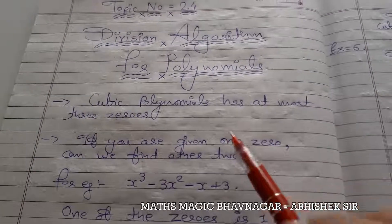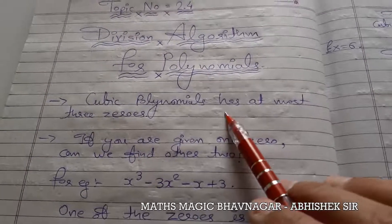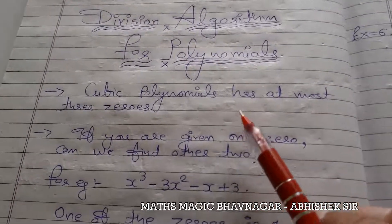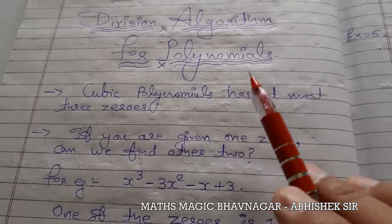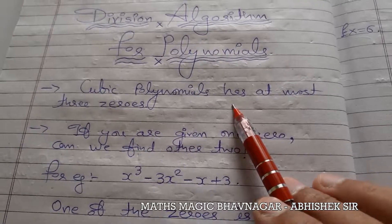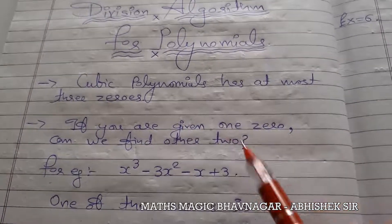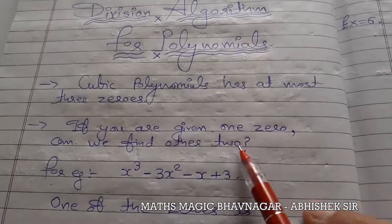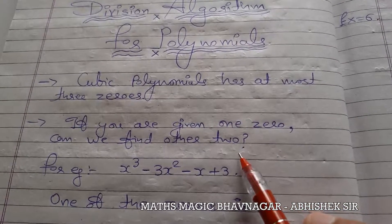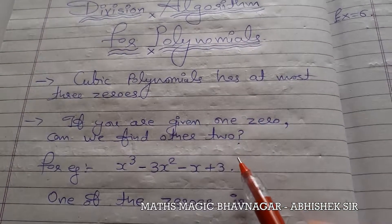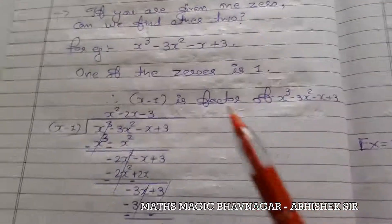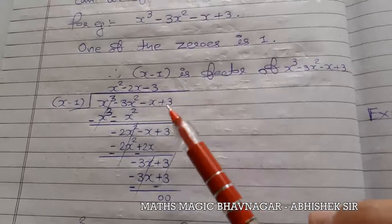So in the theory of the division algorithm for polynomials, they are discussing about the zeros — that a cubic polynomial has at most 3 zeros. If one of the zeros is being given to us, can we find the other 2 zeros? For this, they are applying the division method.